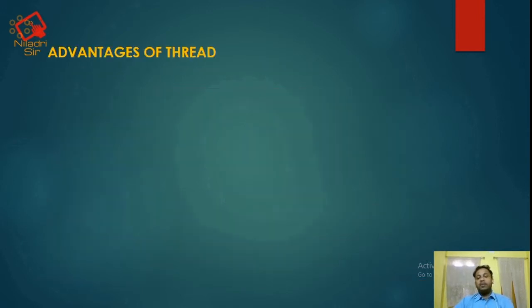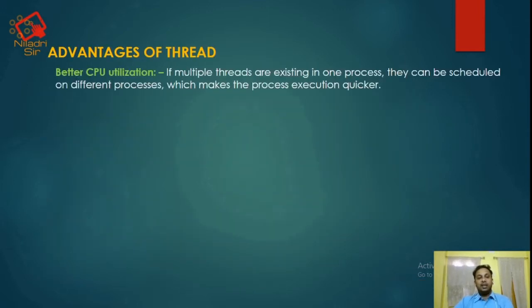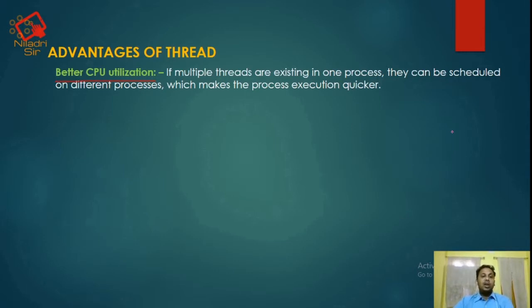Next, the advantages of threads. Number one is better CPU utilization. If multiple threads exist in one process, they can be scheduled on different processors, which makes process execution quicker.